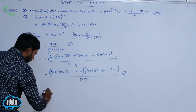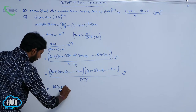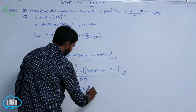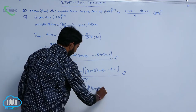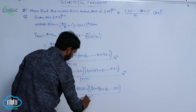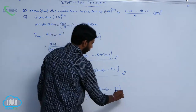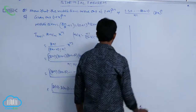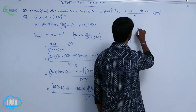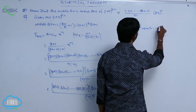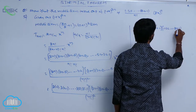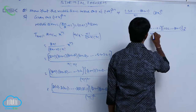In the even terms, 2 is common — appearing n times — giving 2^n. So the even terms become 2^n · n · (n−1) · … · 1 = 2^n · n!. The odd terms are 1 · 3 · 5 · … · (2n−1). This gives: 2^n · n! · [1·3·5···(2n−1)] · x^n / [n! · n!].